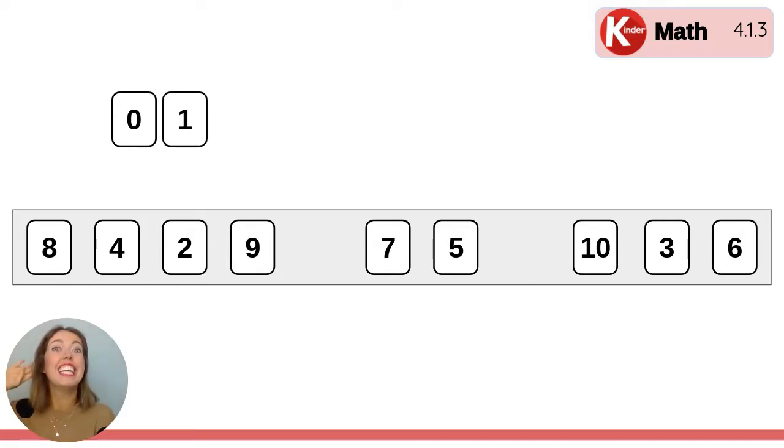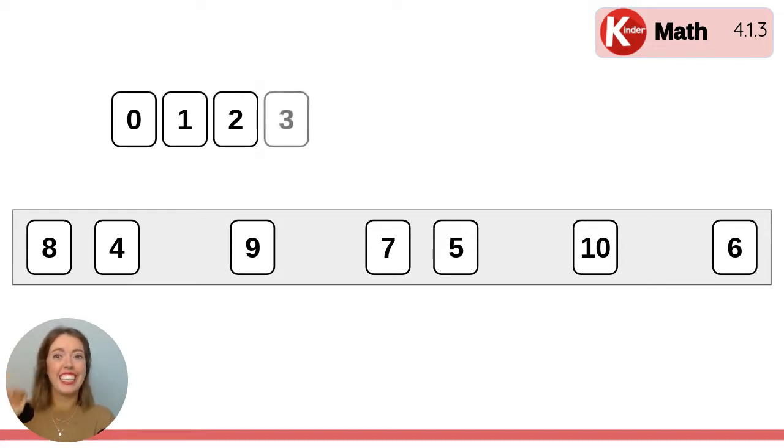One. Then what? Two. Can you find it and point to it? Good job. Let's keep pointing. So we have zero, one, two. Can you point to the next one? That's number three.